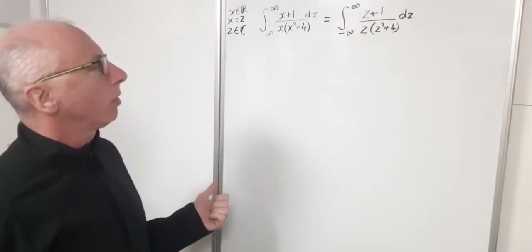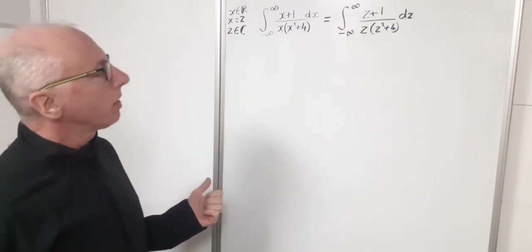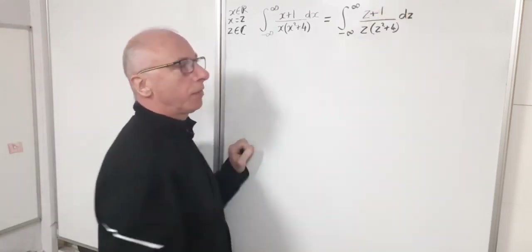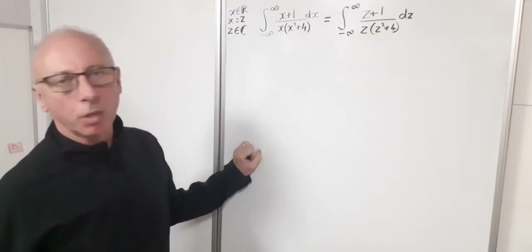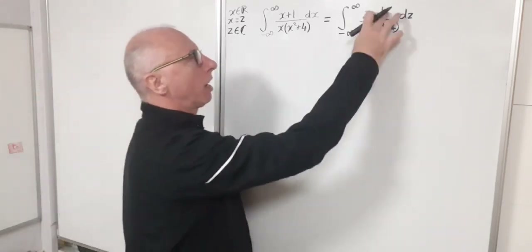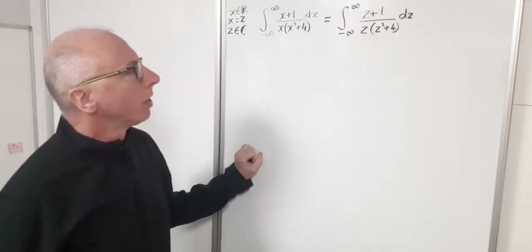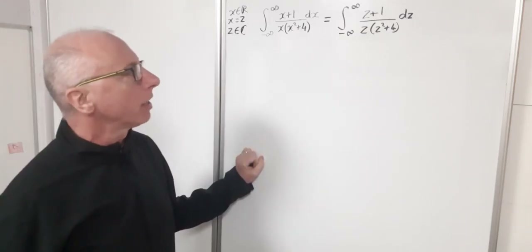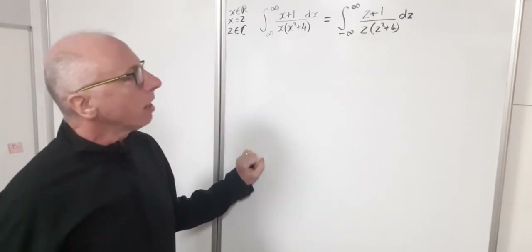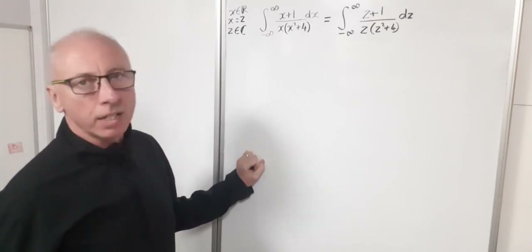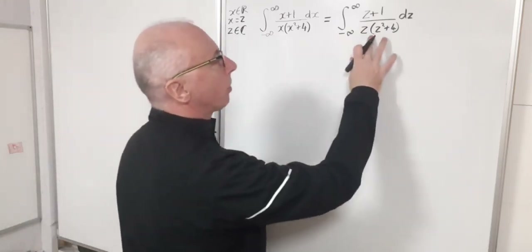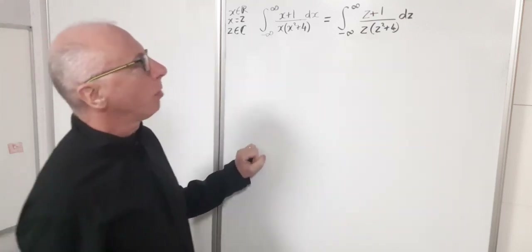First, let's look closely at the integrand. In the denominator, if we expand it out we get a cubic polynomial, while in the numerator we have the linear term z+1. The degree of the numerator is two less than the degree of the denominator, which is what makes the technique I'm about to show valid.